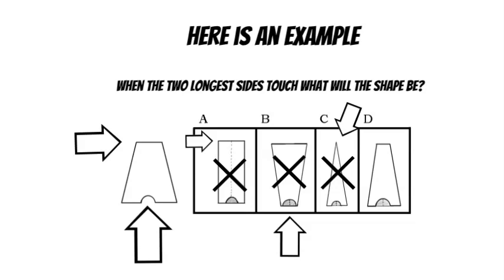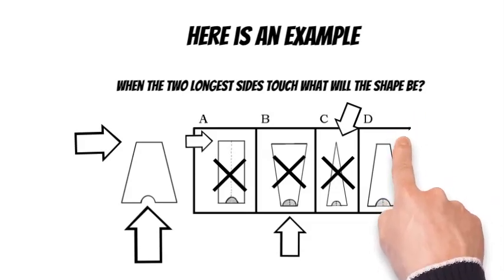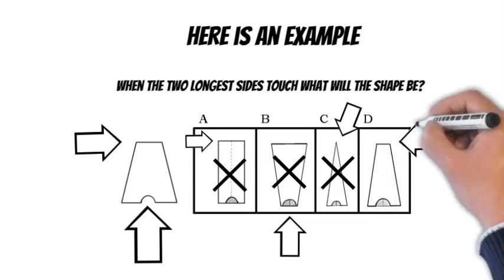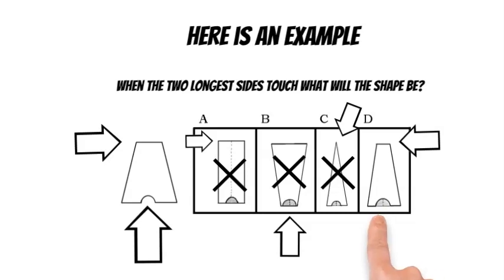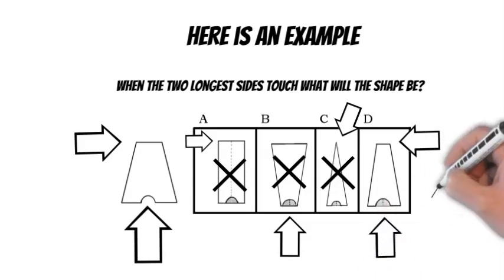So choice D is left. Checking quickly, it is tapered to a flat top and the notch is at the bottom, the widest part. So choice D is correct.